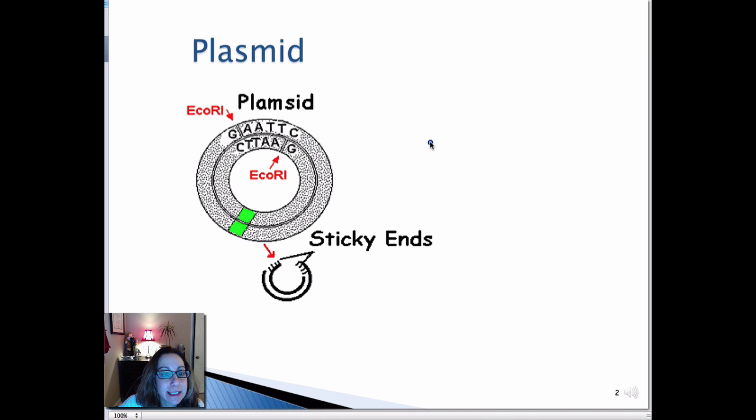Plasmids tend to carry antibiotic-resistance genes. So this is one of the mechanisms that bacteria use to transfer antibiotic resistance from one bacterial cell to another bacterial cell by passing on these plasmids.